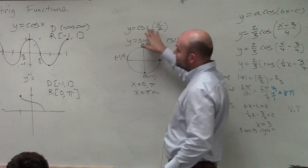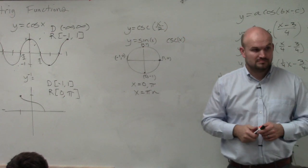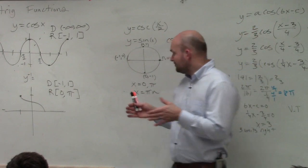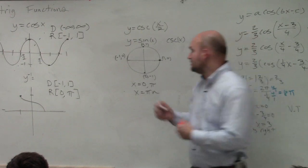Our problem is cosecant of x divided by 2, OK? So therefore, what that means is, our period has now just changed to what? How much?